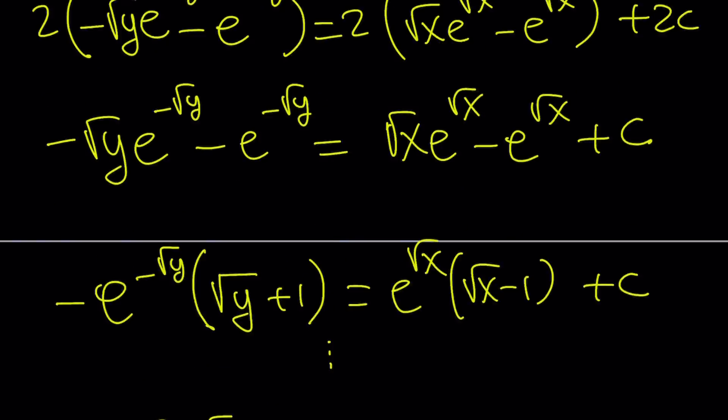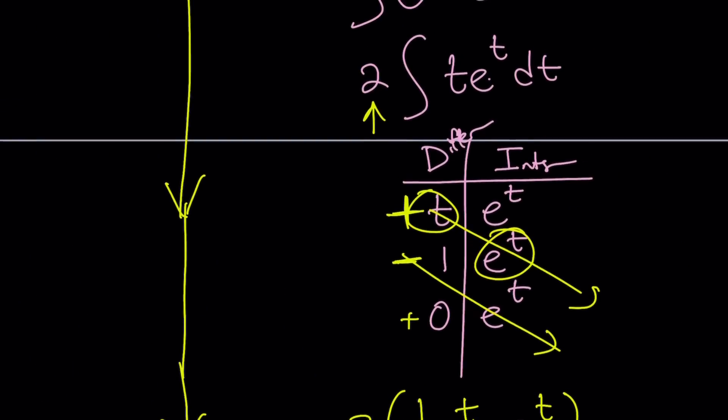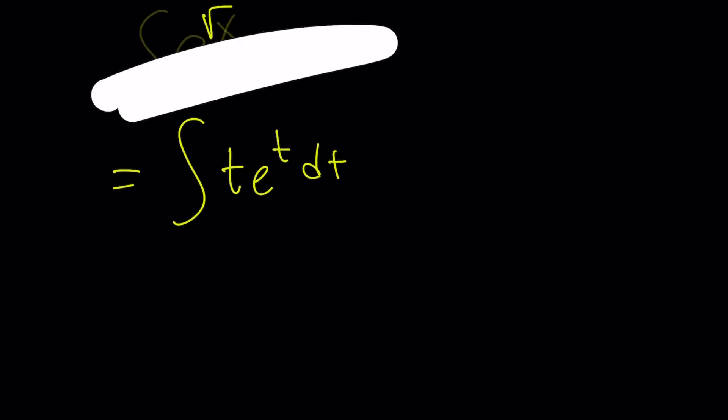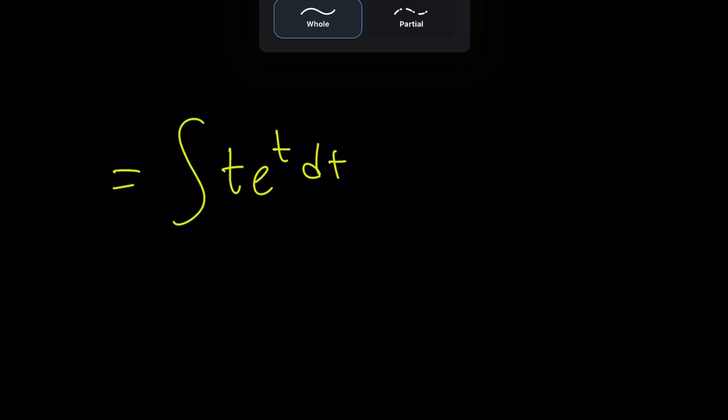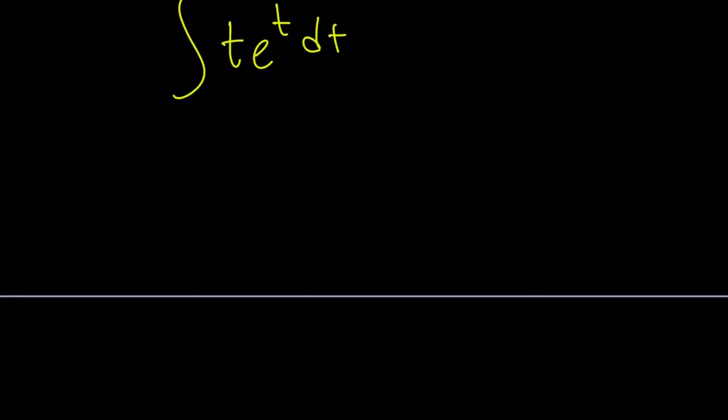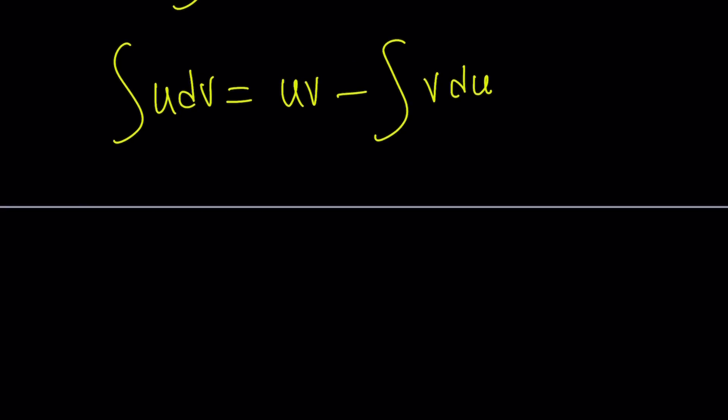So after we substituted t equals square root of x, remember, we got an integral that looks like this: t e to the t dt. So let's forget about the other integral and just totally focus on integrating this one. Because I want to show you the method. So let's go ahead and focus on this now. How do you integrate something like this? We're going to use the same thing. But this time we call this u, dv. And that is equal to uv minus the integral of v du. And guess where this comes from? It comes from the product rule. If you think about the product rule, then you're going to get it. Differentiate both sides. You're going to get the product rule. That's how it works.